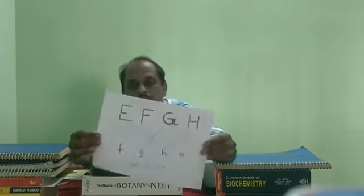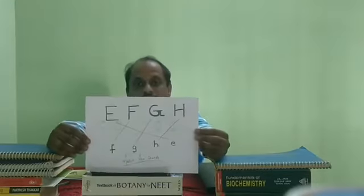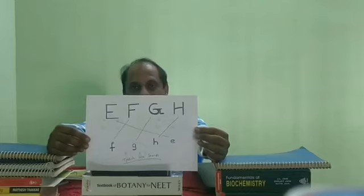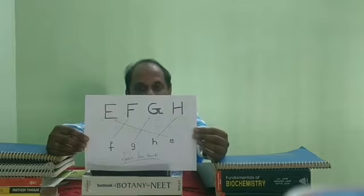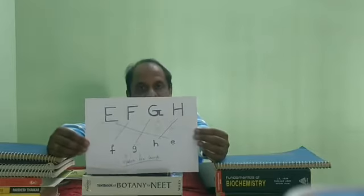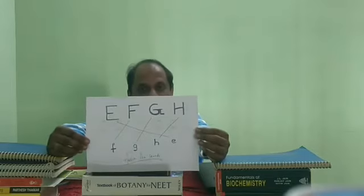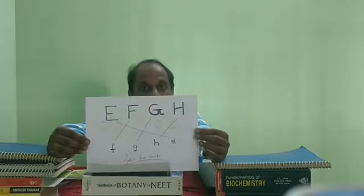I request the parents to help the students match the alphabet and phonic sound. I'll read again. E — the phonic sound is E. F — the phonic sound is F. G — the phonic sound is G. H — the phonic sound is H.